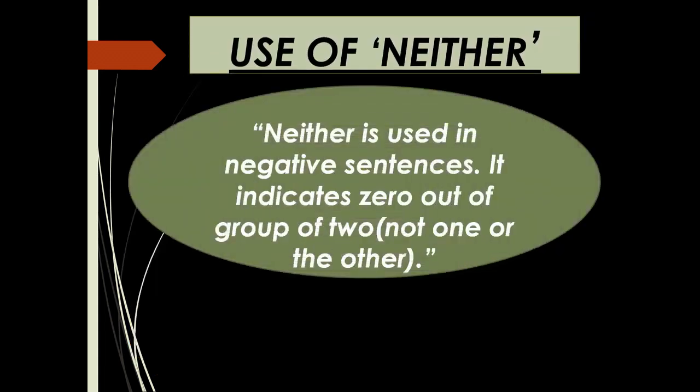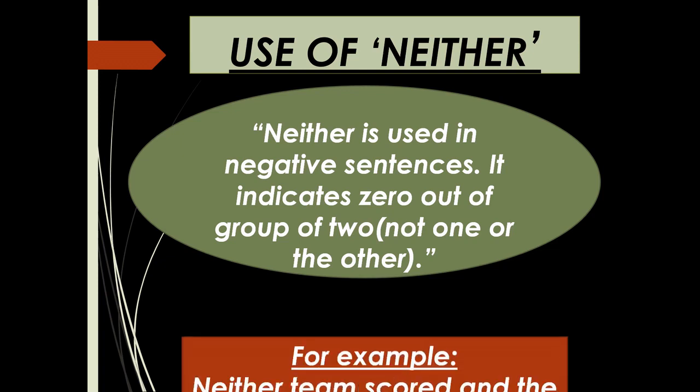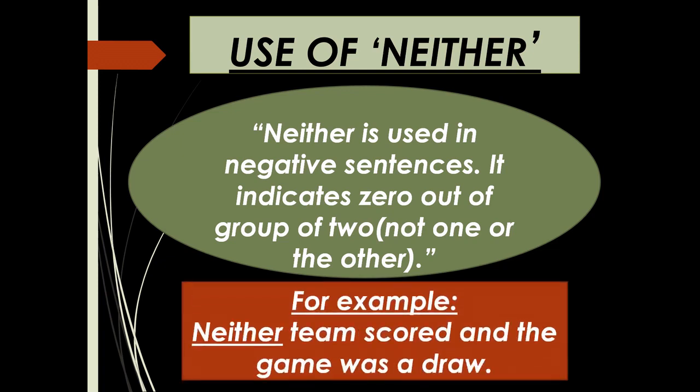Use of 'neither': 'Neither' is used in negative sentences. It indicates zero out of a group of two — meaning not one or the other. For example: 'Neither team scored and the game was a draw.' 'Neither' must be used before a singular noun, but it can also be used with a plural noun.